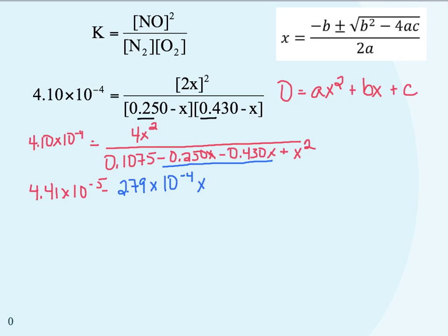To recap: I combined the two x terms (−0.250 − 0.430 = −0.680) and multiplied that by 4.10×10⁻⁴ to get −2.79×10⁻⁴ x. For the x² term, I multiply it by 4.10×10⁻⁴ to get plus 4.10×10⁻⁴ x². Remember, all of this still equals 4x² from the numerator—we only moved what was in the denominator and multiplied it by the k value on the left.